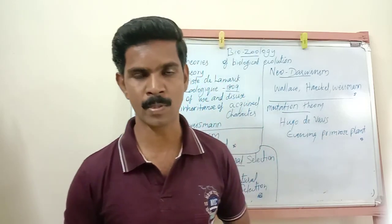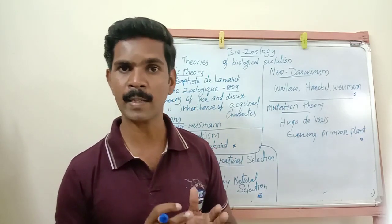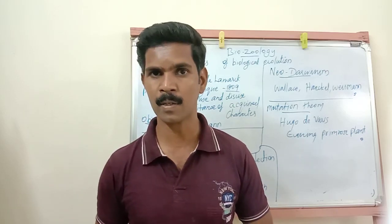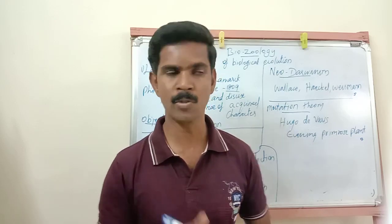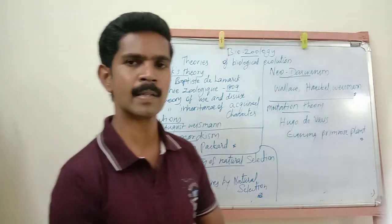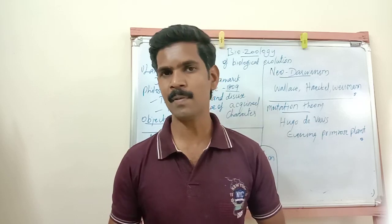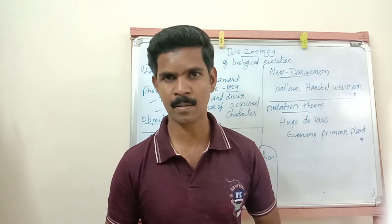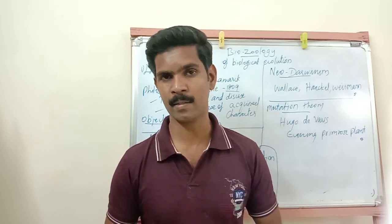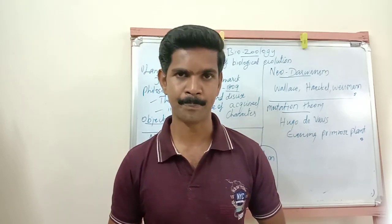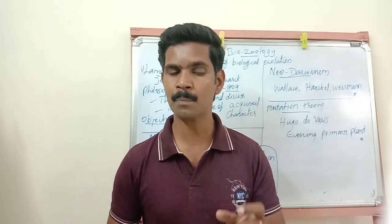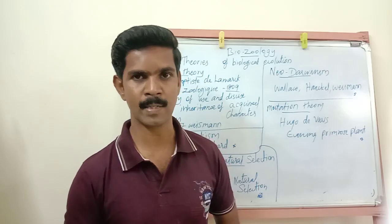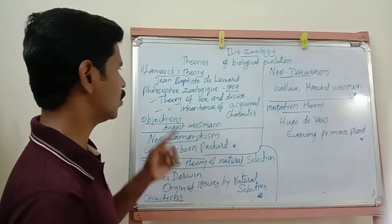To summarize the first principle: when an organism uses a body organ properly, that organ increases in size; if an organ is not used properly, it disappears from the body. The second principle is the Theory of Inheritance of Acquired Characters. Some organisms receive new characters during their lifetime — these are called acquired characters — and these characters are transmitted from one generation to the next.